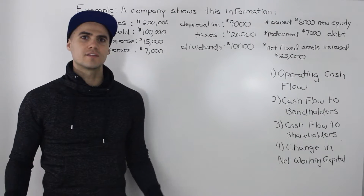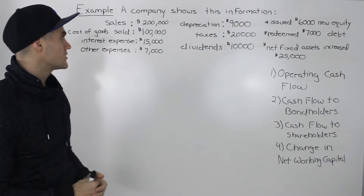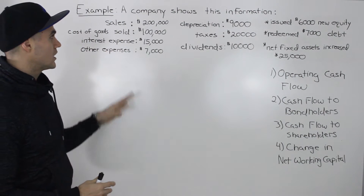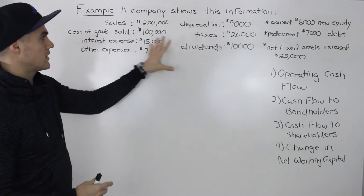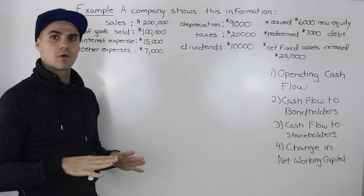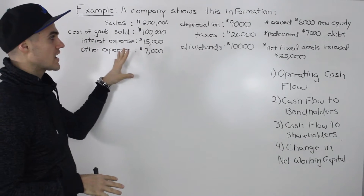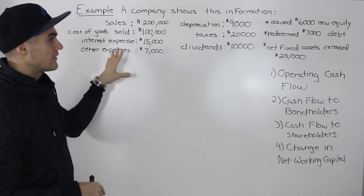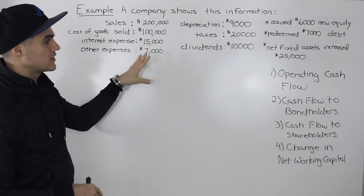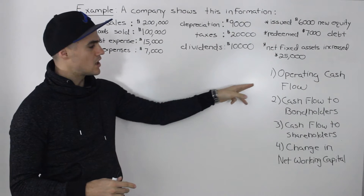Welcome back everybody. In this video, we're going to do an example. We're given a bunch of information about a company — you may want to pause the video and write this information down — and using this information, we're going to have to find four things: the operating cash flow, the cash flow to bondholders, cash flow to shareholders, and the change in net working capital.